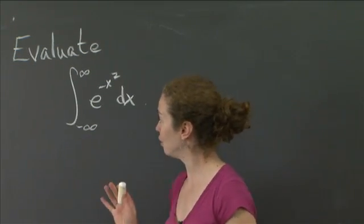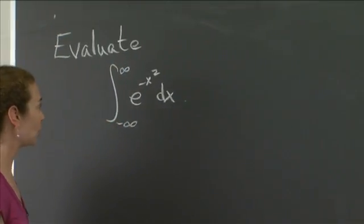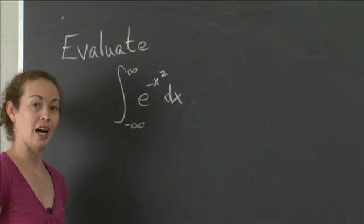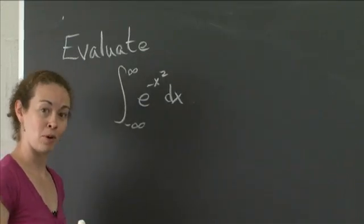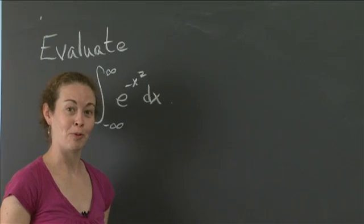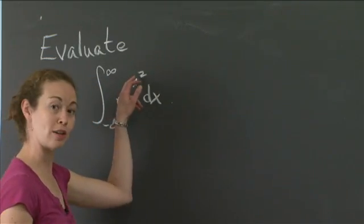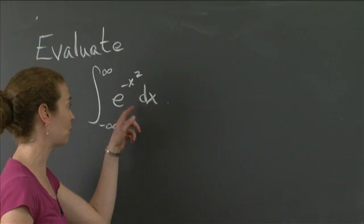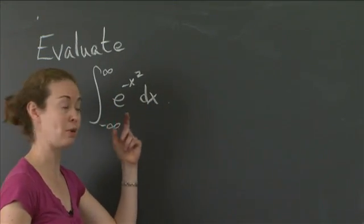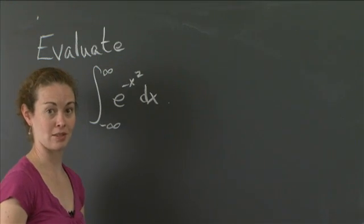How are we going to use polar coordinates to evaluate this? The object is going to be to introduce a little bit more into this integral so that when I actually introduce that in, I'm going to have an r squared term in the exponent, and then by the change of variables and the Jacobian, I'll also get a factor of r multiplied in. And that's what's going to save us.